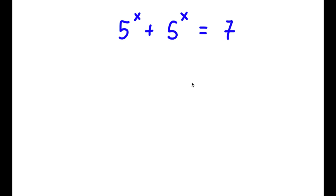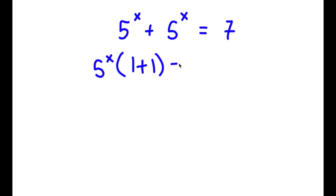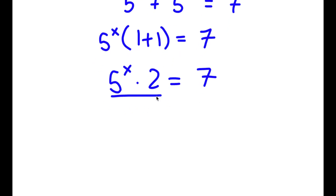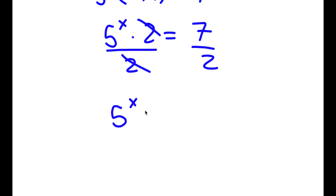In this problem, I have 5 to the power of x plus 5 to the power of x is equal to 7. So to solve this, I'm going to first start by factoring out 5 to the power of x. So now I have 5 to the power of x times 1 plus 1 is equal to 7. Now 1 plus 1 is 2, so I have 5 to the power of x times 2 is equal to 7. And now I can divide both sides by 2, so I have 5 to the power of x is equal to 7 over 2.